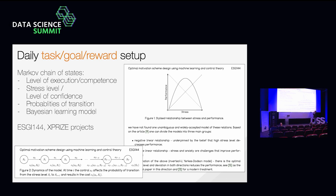What we discovered working on this project is that assigning the right task is a kind of Markov chain of states. If a person is in a specific state, we can give them a specific task. This looks very obvious, but what determines the state? The first thing is the level of execution or competence — if someone is very fluent at selling, we can say they are at a specific state.